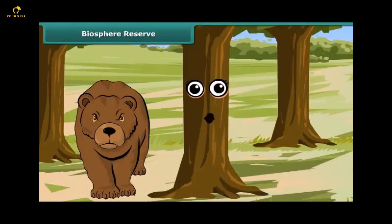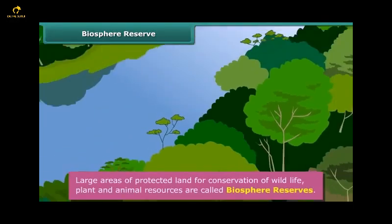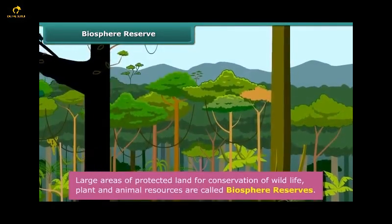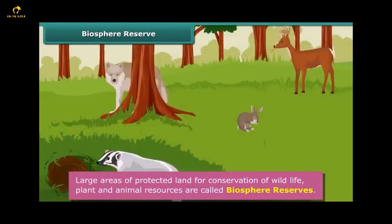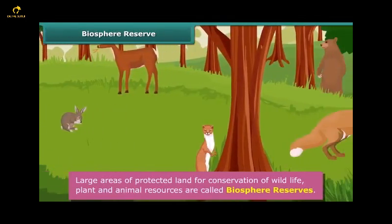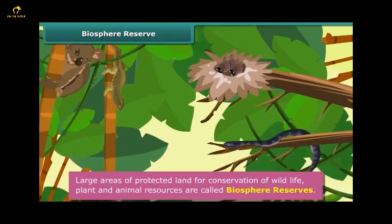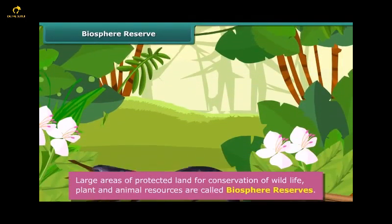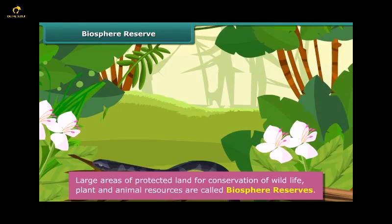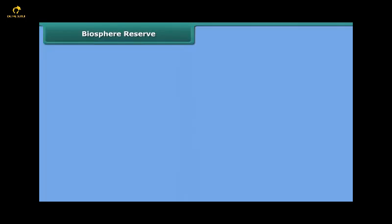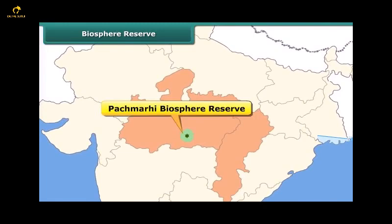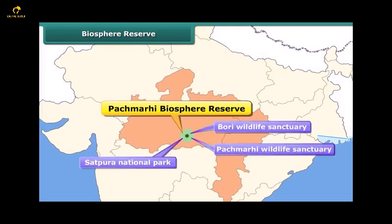Let us now look at biosphere reserves. Large areas of protected land for conservation of wildlife, plant and animal resources, and the traditional life of tribals living in the area are called biosphere reserves. These help maintain biodiversity and culture of an area. A biosphere reserve may also contain other protected areas. For example, the Pachmarhi Biosphere Reserve consists of one national park named Satpura and two wildlife sanctuaries named Bori and Pachmarhi.